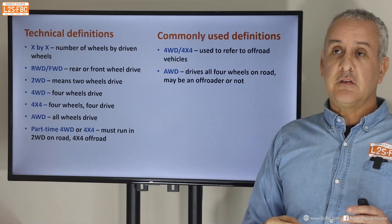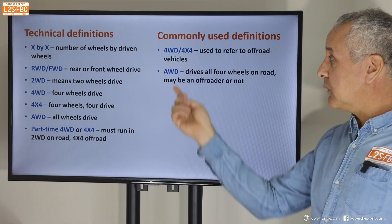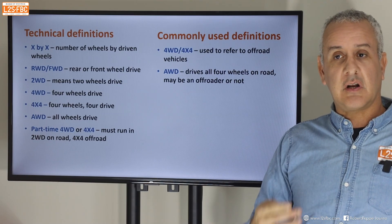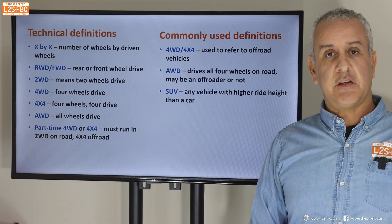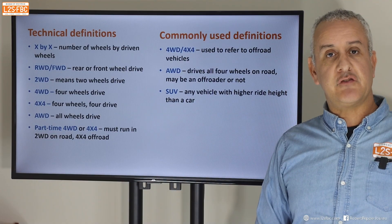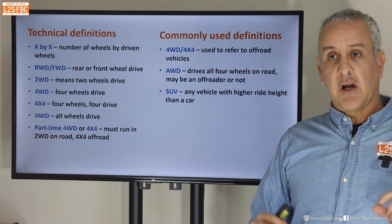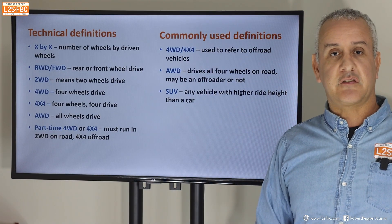For commonly used definitions: four-by-four and four-wheel drive refer to an off-road vehicle — may or may not have low range, a transfer case, or locking diffs, but designed for proper off-road use. All-wheel drive typically means a vehicle without serious off-terrain capabilities of a true four-wheel drive — some capability but limited on clearances and angles. SUV today essentially means any vehicle with a slightly higher ride height than a car. I hope you found this useful — thanks for watching.